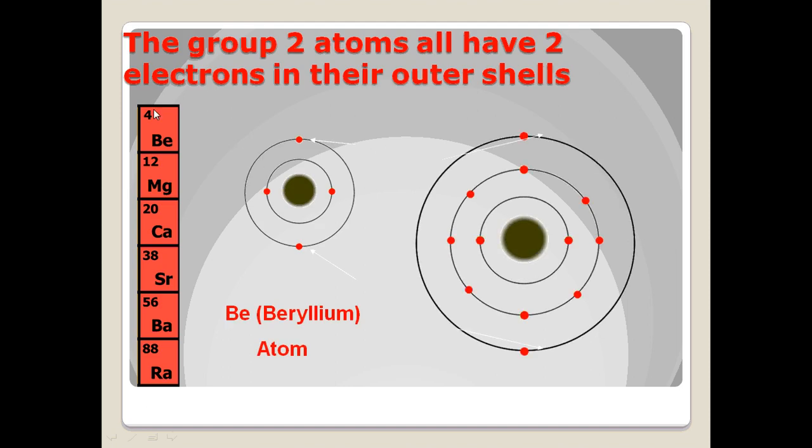So if we take, for example, group 2, we have beryllium, the picture to your left right here. First shell, as we learned earlier, can hold two electrons, and then there are two left over, in beryllium's case, that would fit on the valence shell.